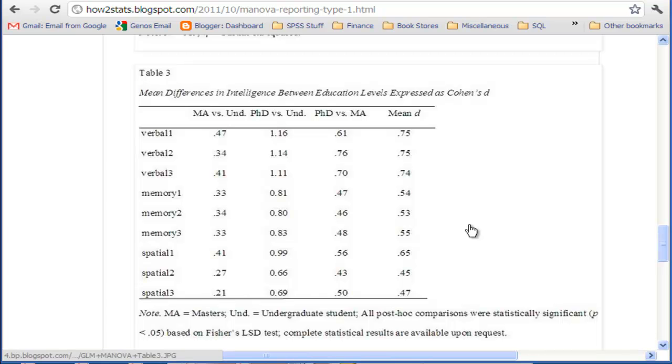Instead of reporting every single one of the post-hoc tests, Fisher's LSD, which is really just a bunch of t-tests, I actually only report Cohen's D. And I report it for all the combinations: Masters versus Undergrad, PhD versus Undergrad, and PhD versus Masters.